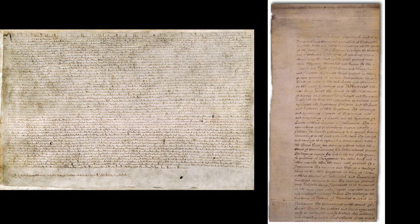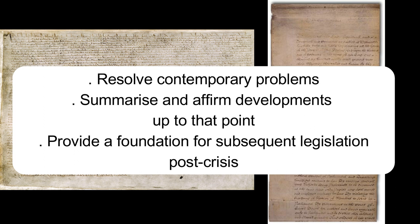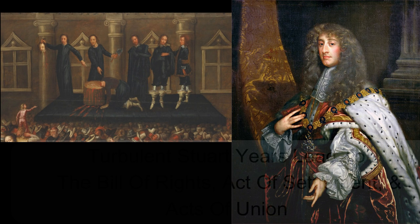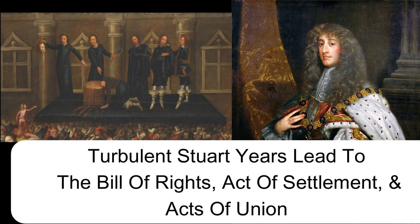These documents were used to answer the contemporary crisis of their day and to summarize the constitutional development, the main themes up to that moment, in a readily digestible way to create a settlement post-crisis. For example, after the execution of Charles I and the turbulent Stuart years that resulted in the deposition of James II, the Bill of Rights and subsequent Act of Settlement, and indeed the Act of Union. Because the Stuart monarchs were Scottish monarchs first and joint monarchs afterwards. As a result of the context in which such documents are created, they are given special constitutional status that effectively makes them touchstones or waypoints of the constitution.